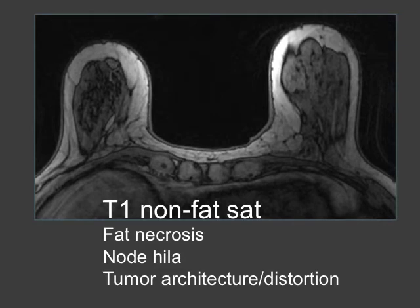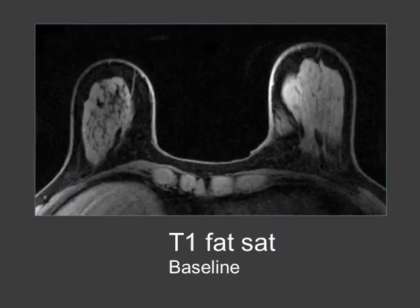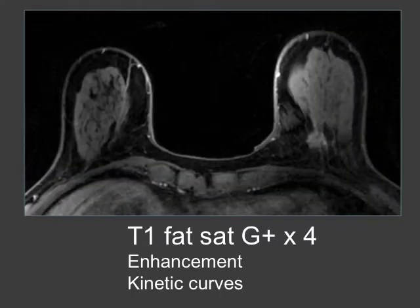Here is the T1 non-fat-saturated sequence in the axial plane. These are useful for looking for fat necrosis, for fat in hilar lymph nodes, and for architectural distortion or mass effect. The T1 fat-saturated sequence serves as the baseline we later compare the gadolinium-enhanced sequences to. Then our four or five sequential T1 fat-saturated gadolinium-enhanced sequences look for areas of enhancement and provide the basic data for our kinetic curves.